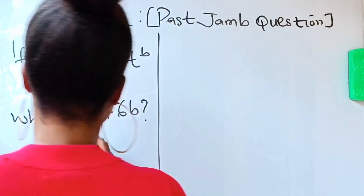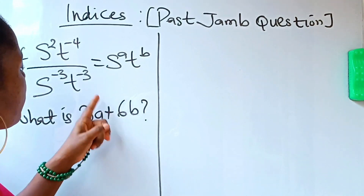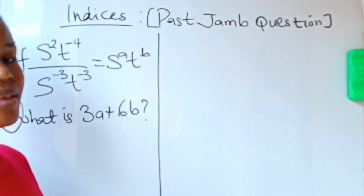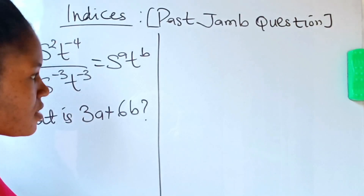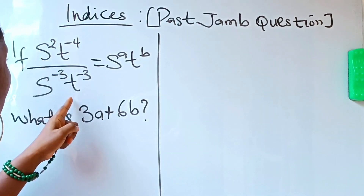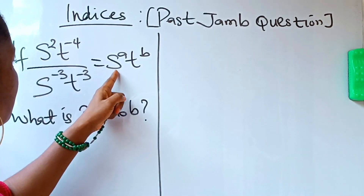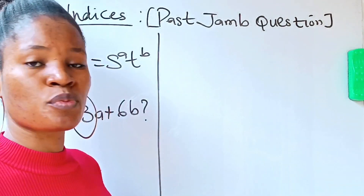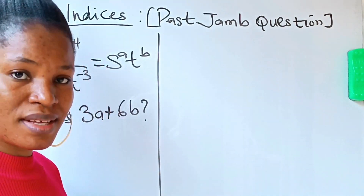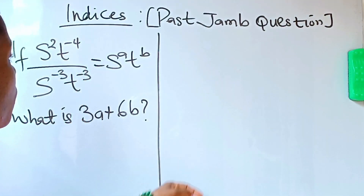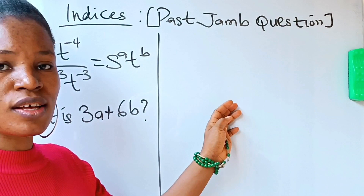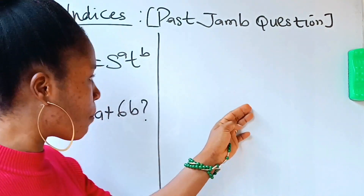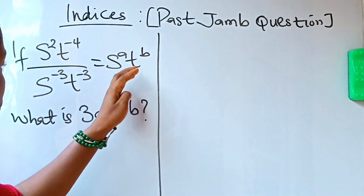When you have something like this, it is under indices. Once you have raised powers, they are under indices. And they are already in the same base — s, t, s, t, s, t — so there is no need to put them in the same base again. We move forward to apply the laws of indices to get the results.